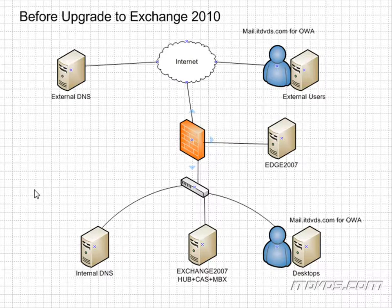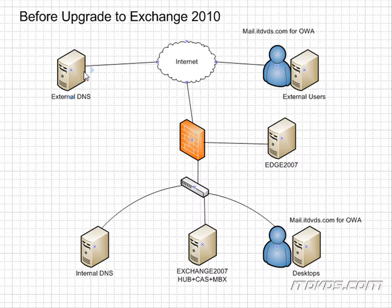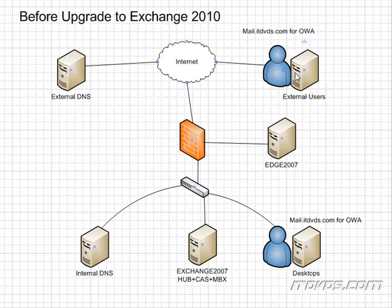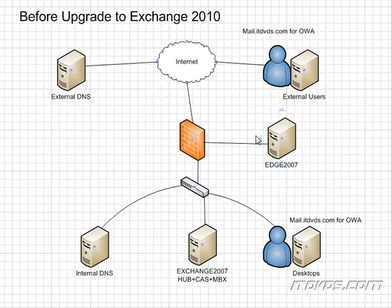Before we upgrade to Exchange 2010, our environment might look like this. This is a pretty standard simple setup where we've got an external DNS server that hosts our external DNS records like our MX records and our host records for our domain. External users access Exchange and their mailboxes with things like Outlook Web Access and Outlook Anywhere. Then we have our internal network with our firewall and a DMZ or perimeter network. In our DMZ, we have our Edge Transport Server.